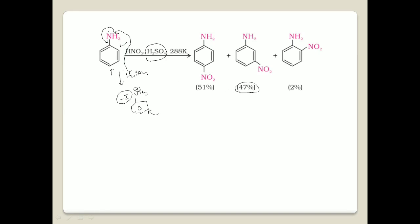So in this case, some amount of the aniline is protonated. Of course, after the NO2 attacks at the meta position, this compound must be quenched with sodium hydroxide solution to remove the H3+, and we will get the NH2 — that means meta-nitroaniline.